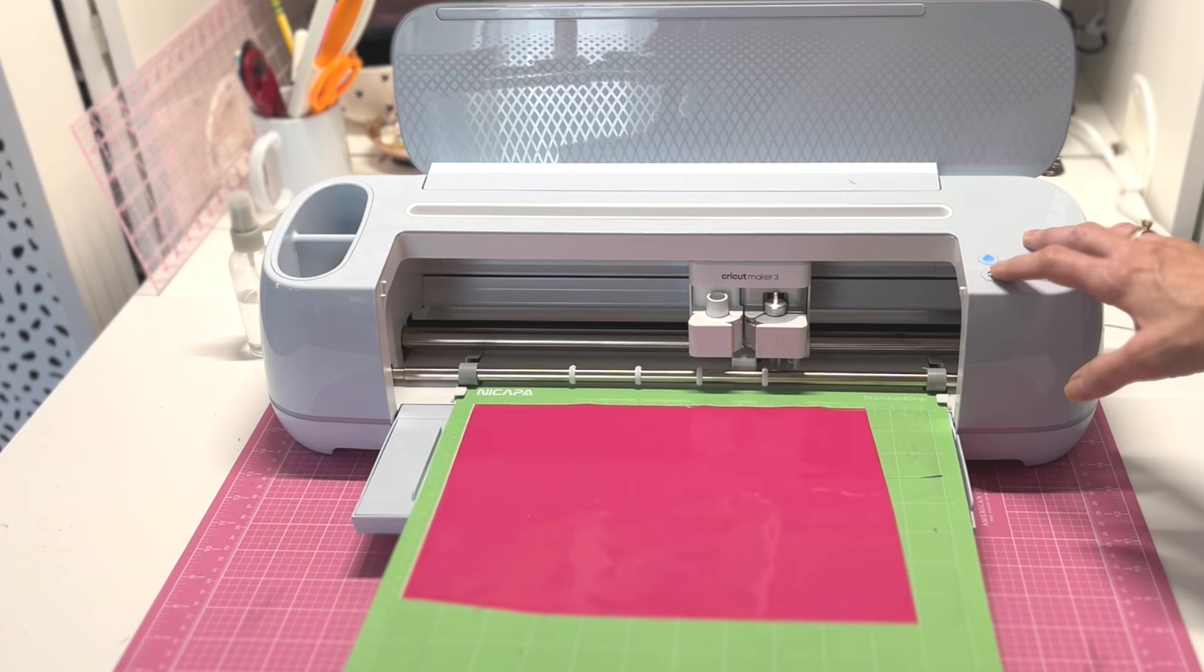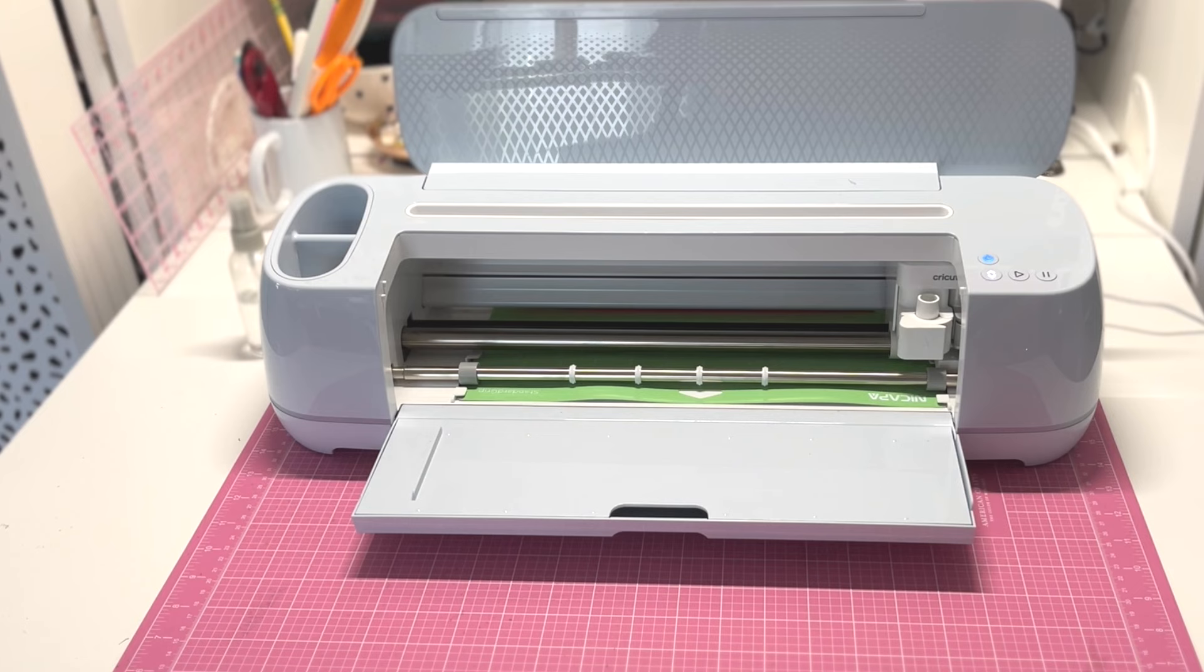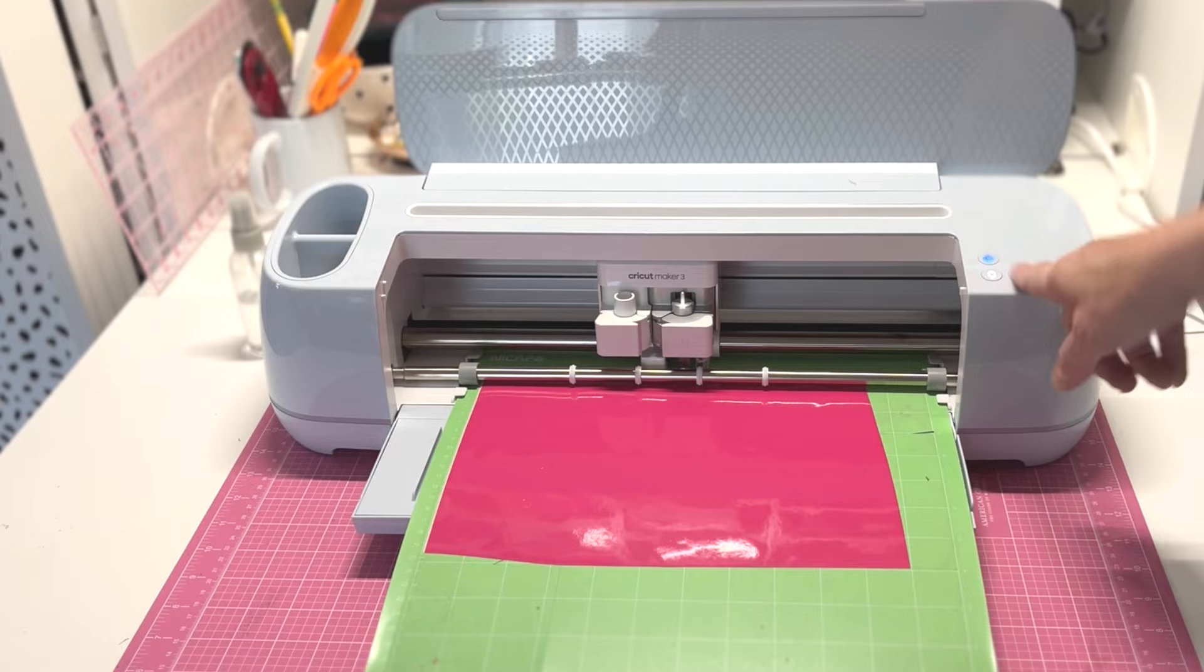So I've sent the design to the Cricut. We're just going to make sure the fine point blade is in. With the load button, it's going to check and make sure that that fine point blade is in. It's also checking the mat. Once it's ready to go, the play button is going to light up. So we're going to go ahead and cut that.